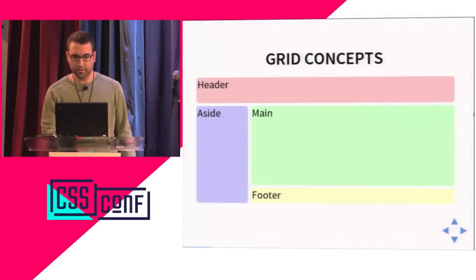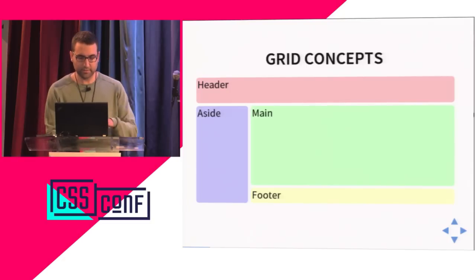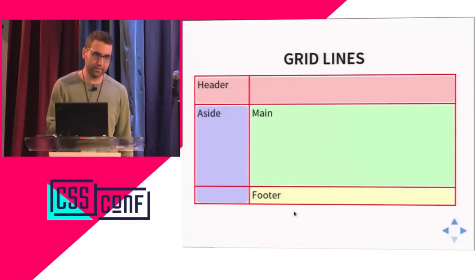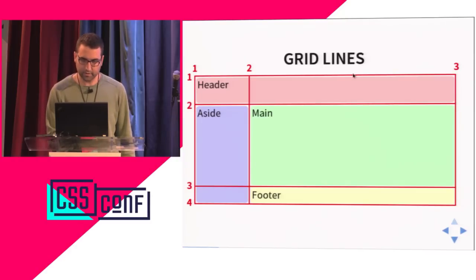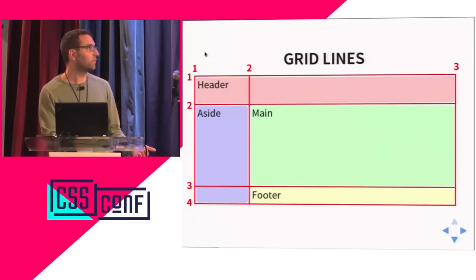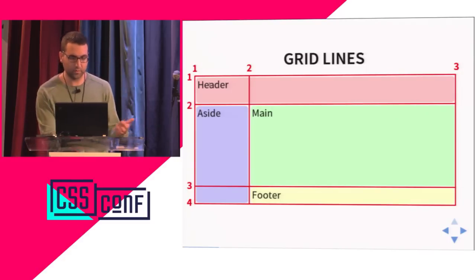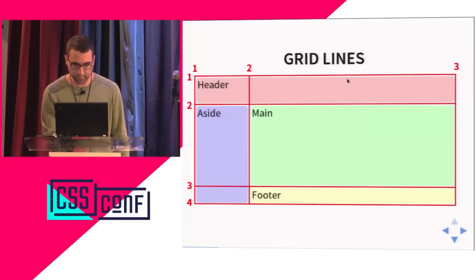Let's talk about some grid concepts. This is a very simple grid with one row for the header, the column, the main, and the footer. The most important concept in CSS Grid Layout are the grid lines, because they are actually numbered — we have three vertical lines (1, 2, 3) and four horizontal lines (1, 2, 3, 4). These numbers are really important because when you place elements on the grid, you reference these lines. For example, to put the header across the full width, you place it between the first and the third vertical lines.